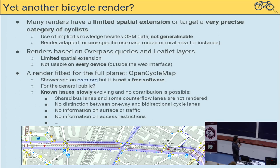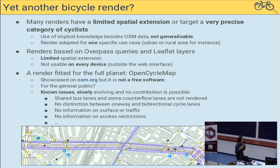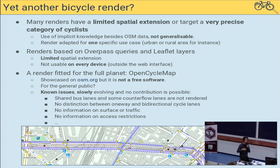There are some known issues with OpenCycleMap because it's not free software. For instance, shared bus lanes and counter-flow lanes, which are very common in some places, are not rendered. It also targets the general public with an easy-to-read key, but the key can be quite confusing for newcomers — for instance, tracks are shown as dotted instead of solid.